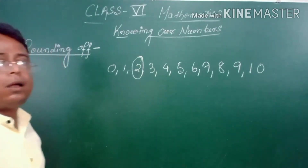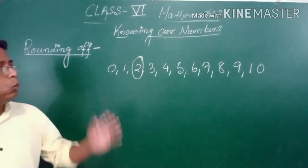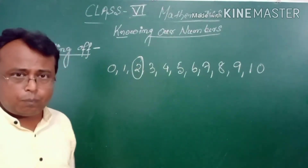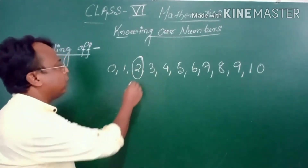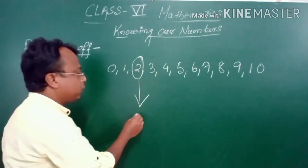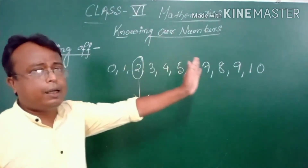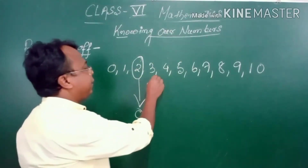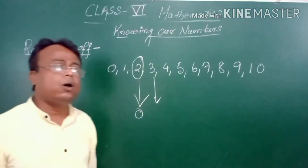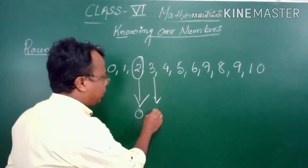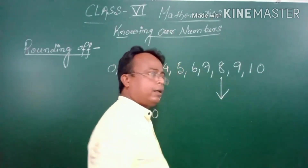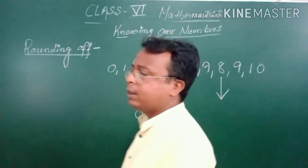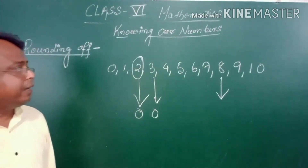Now I am writing numbers from 0 to 10. If I ask about the number 2 — is 2 nearer to 10 or nearer to 0? Obviously the 2 is nearer to 0. That's why I am rounding up this number 2 to 0. Now taking the number 8 — is 8 nearer to 10 or 0? Yes, it is nearer to 10.